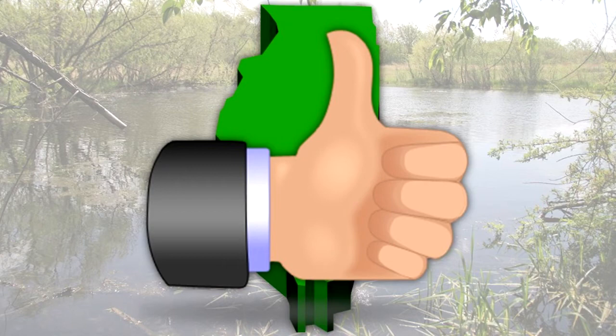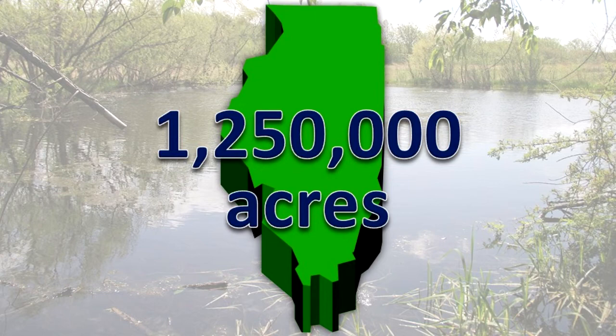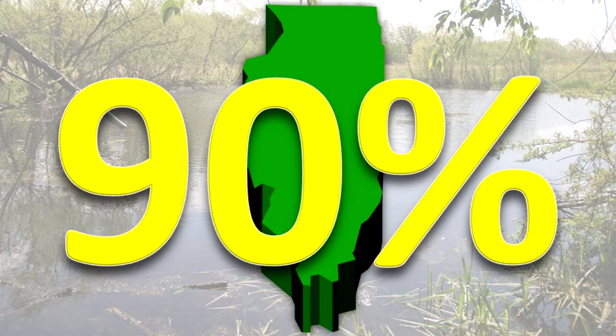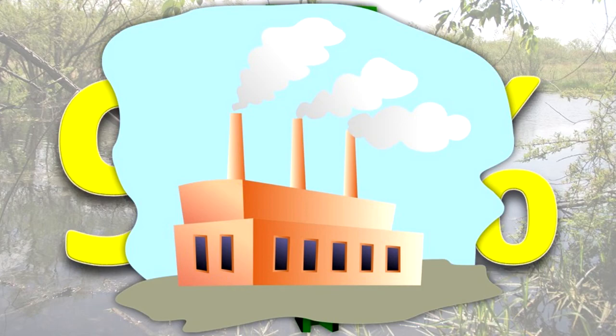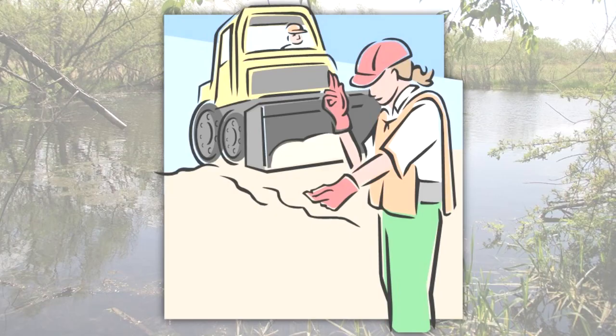What are some threats to wetlands? The amount of wetlands in the land that is now Illinois once covered about 8.2 million acres. Today, about 1.25 million acres of wetlands remain. Nearly 90% of the wetlands in the state have been destroyed, mainly by human activities and mainly for agricultural purposes and urban and industrial development. Other threats to wetlands continue to occur, like soil erosion, habitat destruction, and chemical pollution.